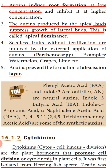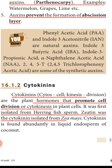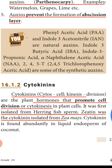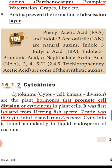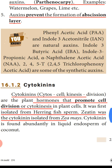Next we are going to study another plant hormone: cytokinin. 'Cyto' means cell, 'kinesis' means division. Cytokinin is a plant hormone which promotes cell division or cytokinesis in plant cells. This was first isolated from herring fish sperm. Zeatin is a type of cytokinin, isolated from maize. Cytokinin is found abundantly in liquid endosperm — the fluid present inside a coconut, for example.